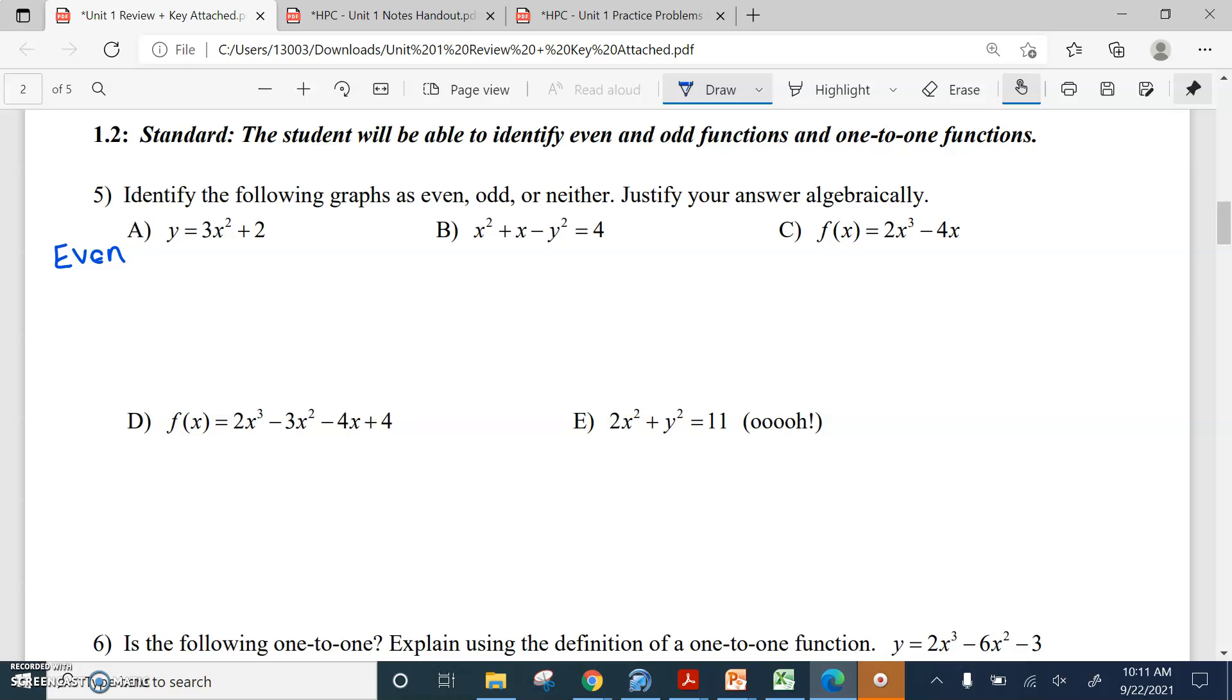But how do I prove that algebraically? Well, to prove even, what we do is we replace x's with negative x's, leave everything else alone, and see if we can get back to the original equation. So y equals 3, replace x with negative x squared, leave everything else alone. Here we see that we have a negative x raised to an even power, so we know that's going to come back positive. So we can rewrite that back to 3x squared plus 2. We've just proven even because we've proven that f of negative x equals f of x, the original function. And then I'd say therefore, even.